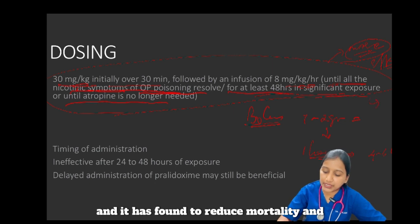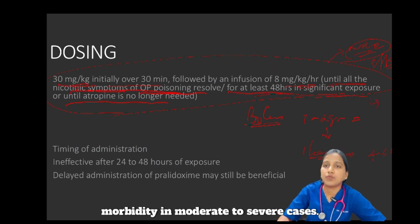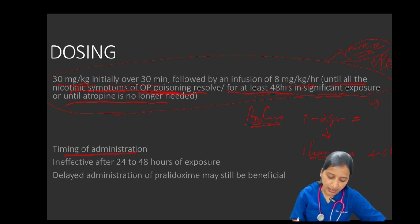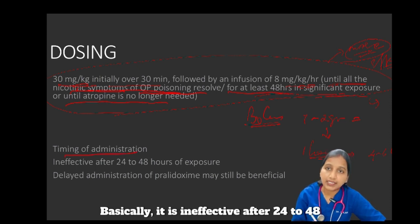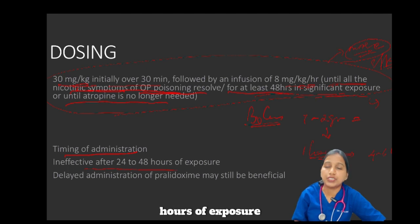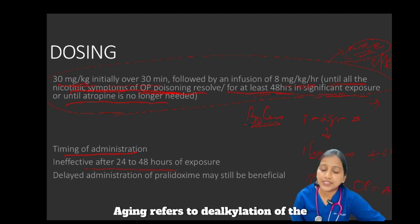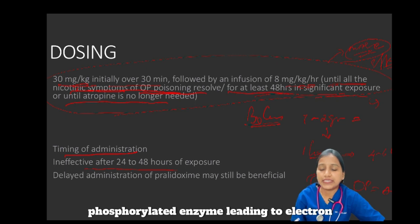However, the continuous infusion dose is found to be more advantageous than the bolus dose. The infusion dose is more effective and has been found to reduce mortality and morbidity in moderate to severe cases. Regarding timing of administration: pralidoxime is basically ineffective after 24 to 48 hours of exposure due to the phenomenon of aging.